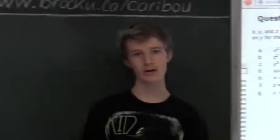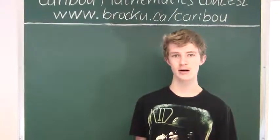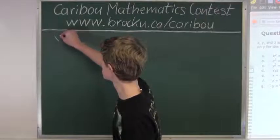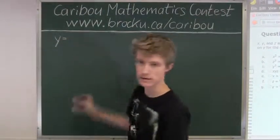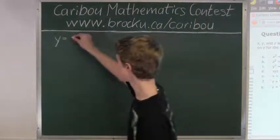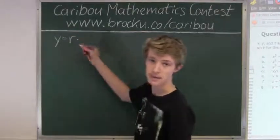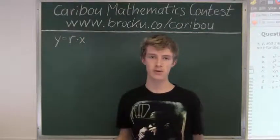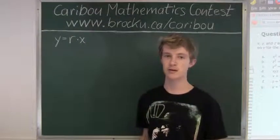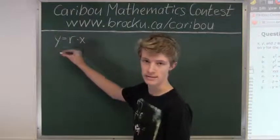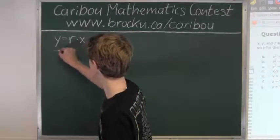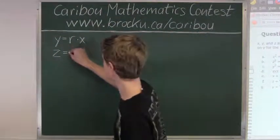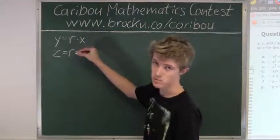So we know that from the question, Y is a simple interest on X. So we will write Y equals the interest rate, which we will write as R, times X. And we also know from the question that Z is a simple interest on Y. So we will have Z equals the interest rate times Y.